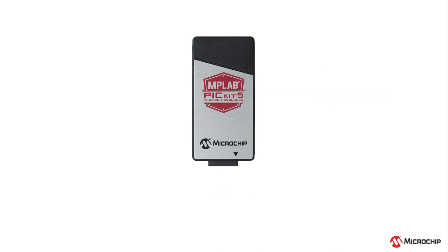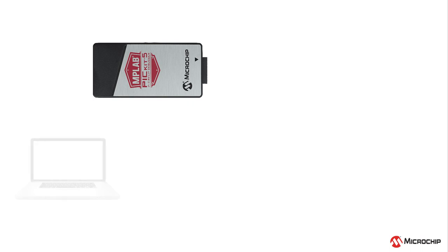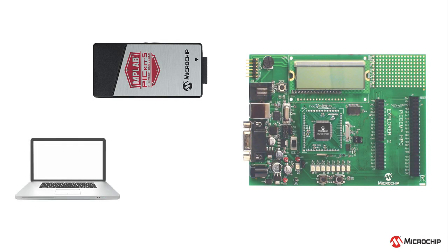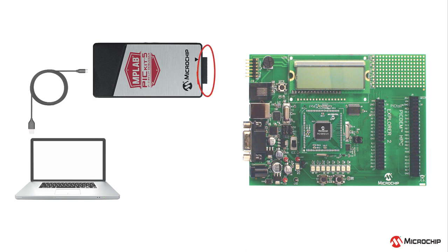You only need make a few simple connections to get underway. First, connect the PICkit-5 to your host computer using the supplied USB cable. A USB-C connector is used on the debugger, but the cable connects to an A-type connector on your computer. The tool provides an 8-pin single inline connector. Connect this to your hardware directly, or via a cable or header, to allow debugging using a variety of protocols.